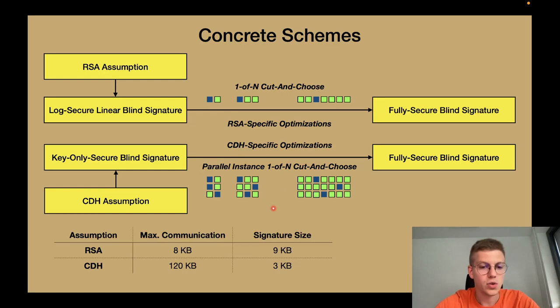In the end, we also compute some parameter estimations taking the security loss into account. We see that the RSA based scheme is balanced while the CDH based scheme has very short signatures. If you are more interested in our techniques and our results, feel free to look into our paper at ePrint or to attend our talk at crypto. Thank you.